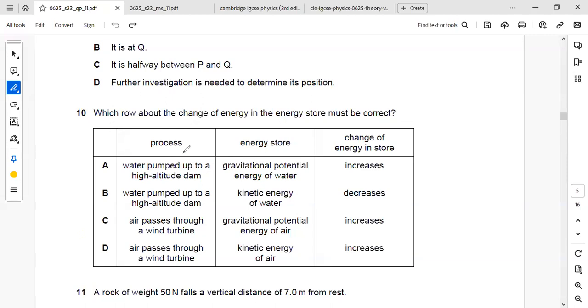Next, which row about the change of energy in the energy store must be correct? Here they are telling about potential energy and kinetic energy. So potential energy is actually M.G.H. When something is on height, the potential energy increases. Something is on rest or something is on height, potential energy increases.